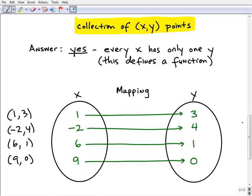And you can see here, let me just give you the answer. You probably already saw that. Yes, this in fact is a function because every X has only one Y. This defines a function. So what does this really mean? Well, if you look here at our X and Y mapping diagram, this 1 is only mapping, or only paired up with a 3.